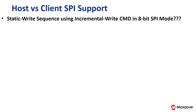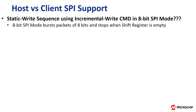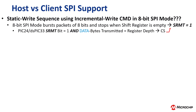Now that we've shown how data must be parsed for 8-bit transmission, let's look at how a host SPI module operating in 8-bit mode can facilitate a static write operation using the incremental write command. In 8-bit SPI mode, the SPI module will burst packets of 8 bits and stop when the hardware shift register is empty. The PIC24 and DSPIC33 devices have a shift register empty flag — the SRMT bit — which when set to 1 indicates when the 8-bit data has successfully transmitted. When the SRMT bit is set to 1 and the number of data bytes transmitted equals the target register depth, chip select can be raised to complete the static write operation.